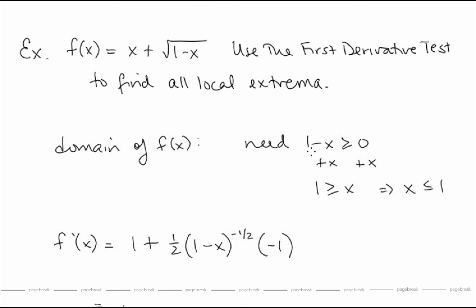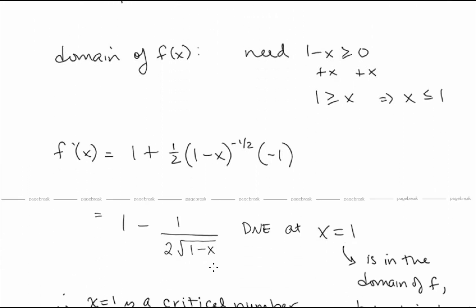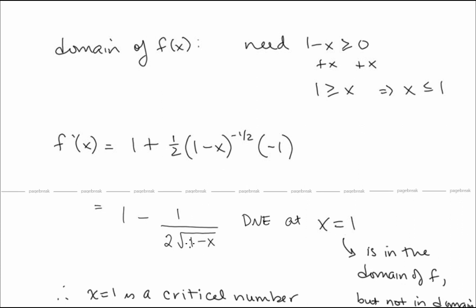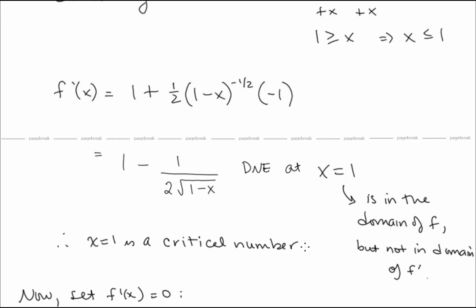Step 2: Finding f'(x) using the chain rule: f'(x) = 1 + (1/2)(1 - x)^(-1/2)(-1) = 1 - 1/(2√(1 - x)). This does not exist when x = 1, which is in our domain but cannot be plugged into the derivative. So x = 1 is a critical number.